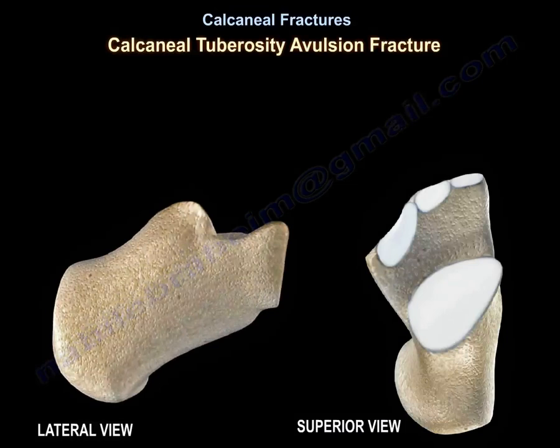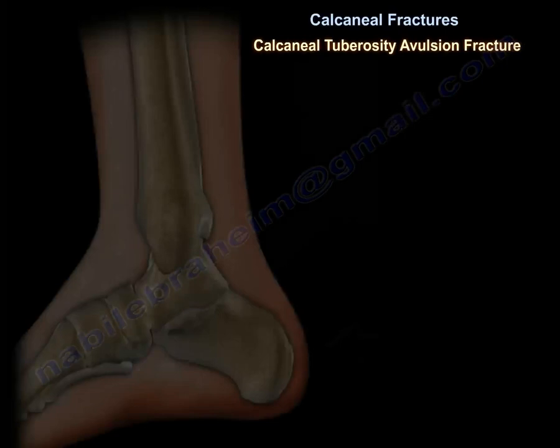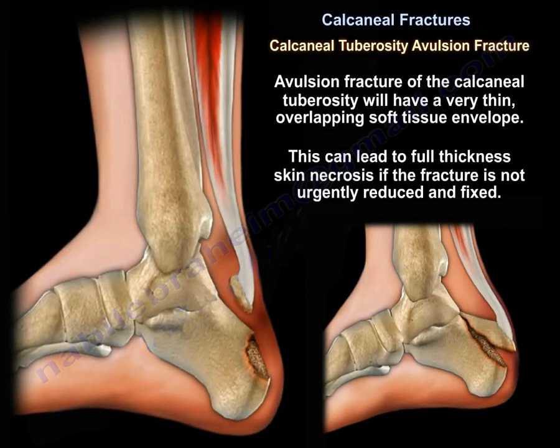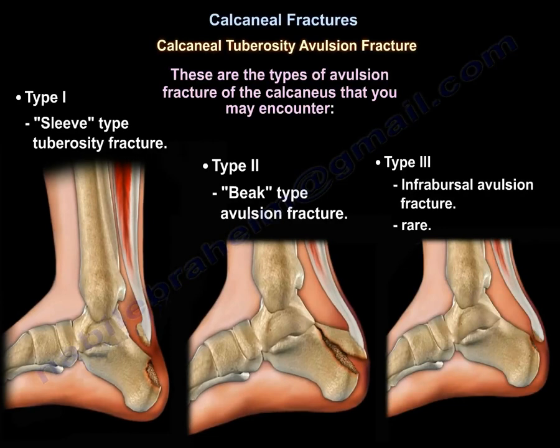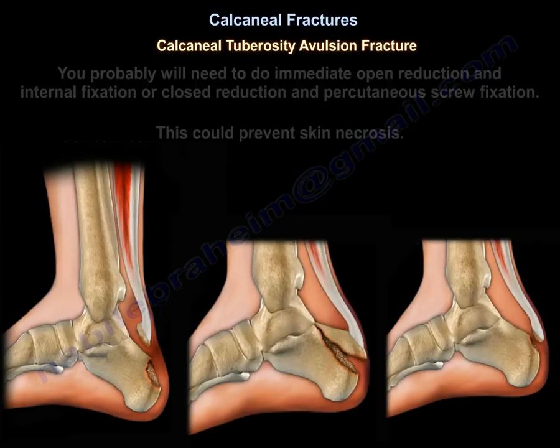Avulsion fracture of the calcaneal tuberosity: this avulsion fracture will have a very thin overlying soft tissue envelope that can lead to full-thickness skin necrosis if the fracture is not urgently reduced and fixed. These are the types of avulsion fractures of the calcaneus that you may encounter.